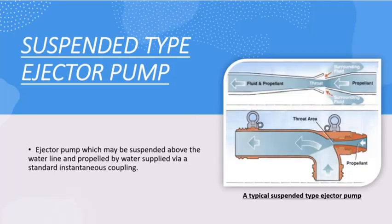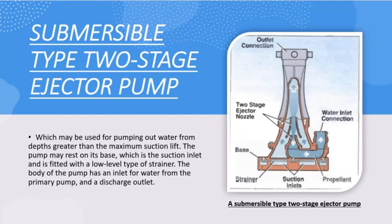The next type is the suspended type ejector pump. As the name suggests, the pump will be suspended above the water line and propelled by the water supplied through a standard instantaneous coupling.